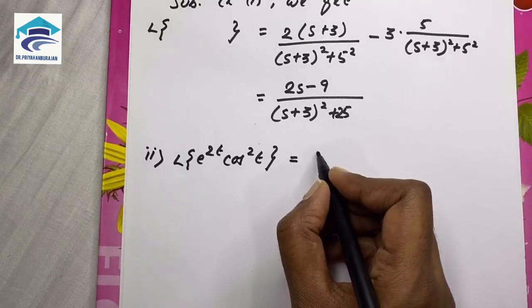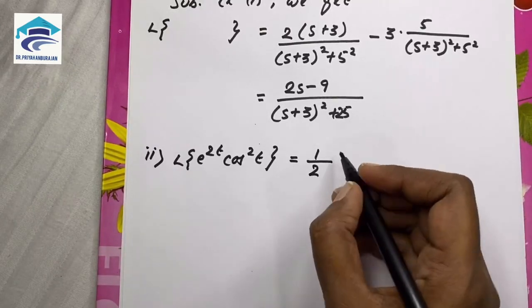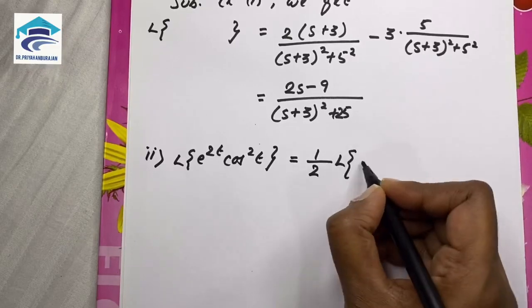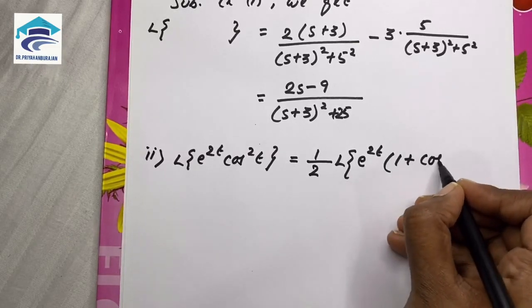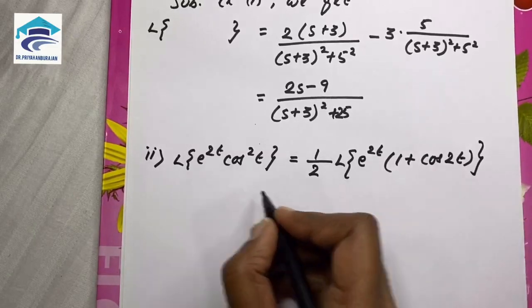Let me take that 1 by 2 outside because it is a constant. This will become L of e power 2t into 1 plus cos 2t.